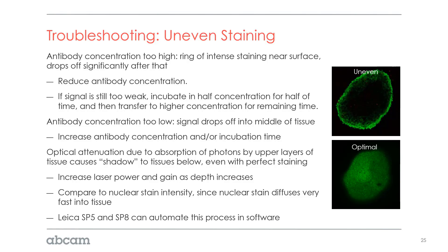Optical attenuation due to absorption of photons by the upper layers of tissue can cause shadowing, making deeper tissue layers appear dim with low signal. This is not uneven labeling — what's happening is the top layers are clouding the bottom layers and fewer photons are reaching the detector. To address this, some microscopes allow you to increase laser power as you go deeper into the tissue, compensating for reduced photon return. This is an imaging and optical attenuation issue, not a labeling issue.